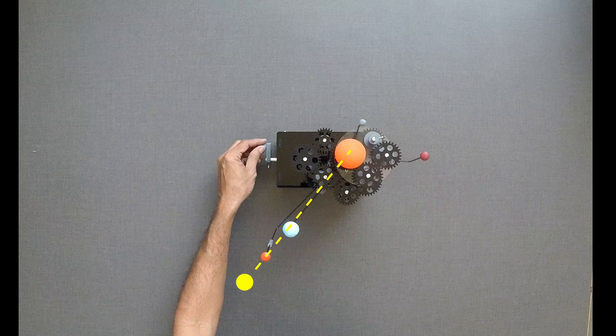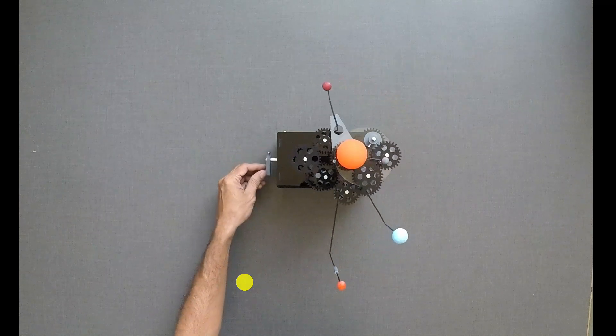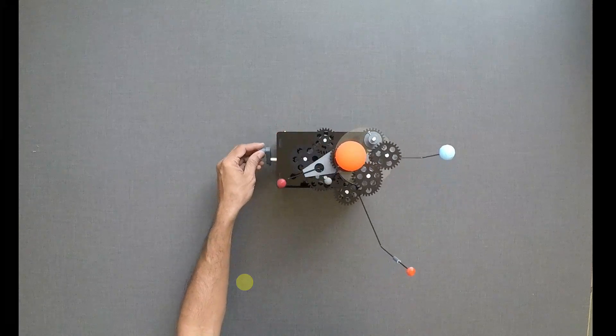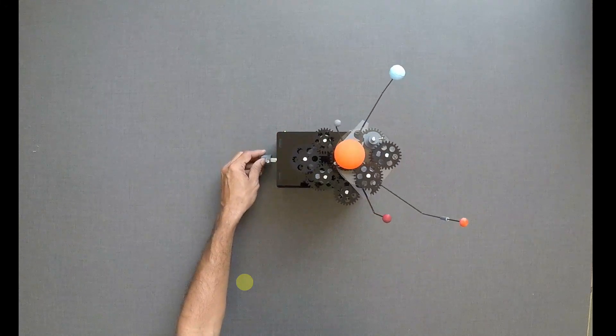The speed with which Mars revolves around the Sun is slower than that of Earth, as Earth is closer to the Sun.